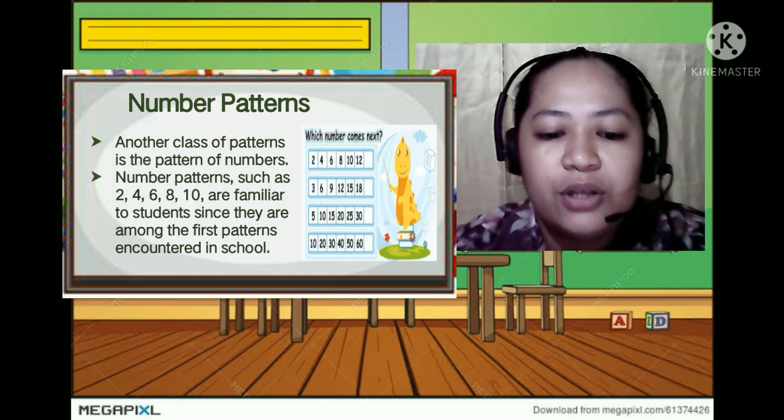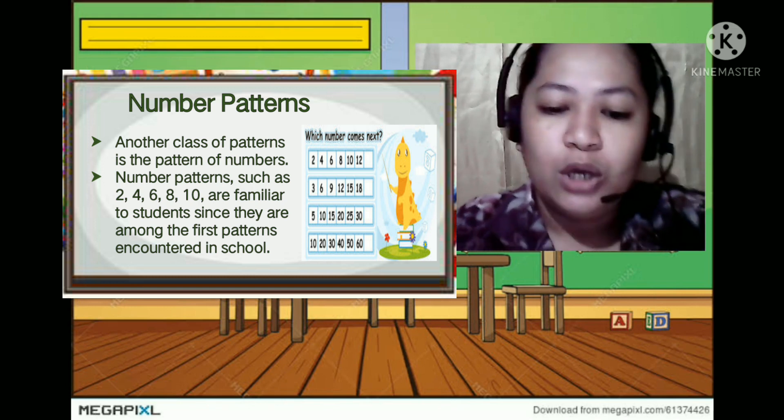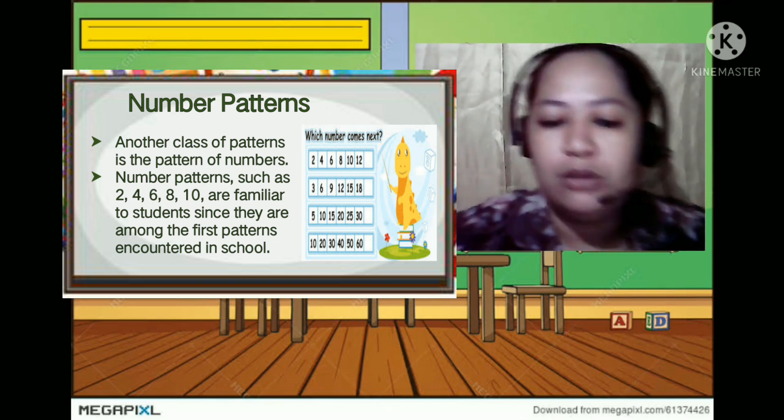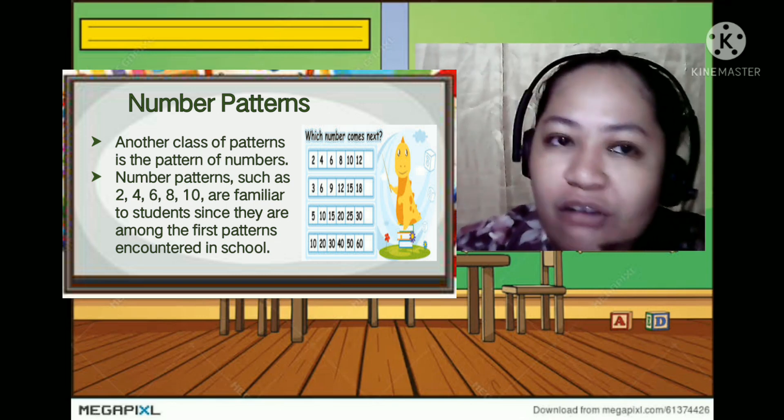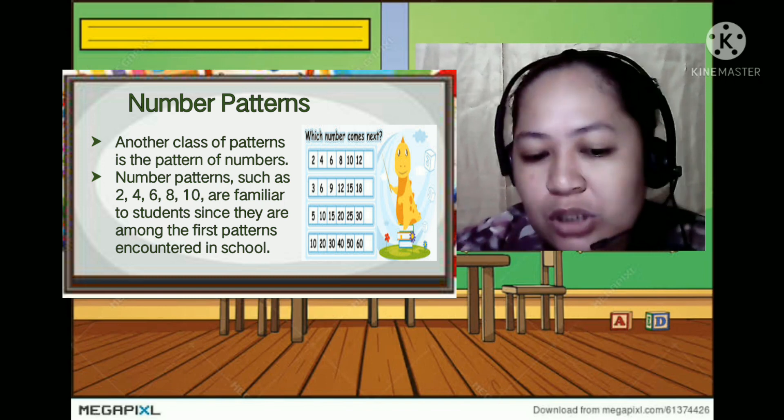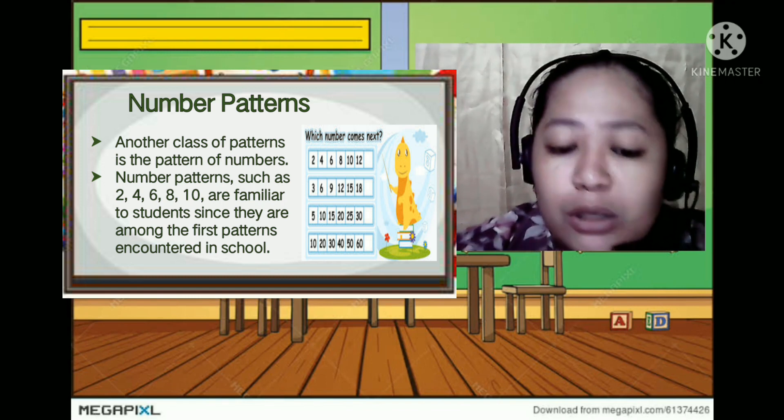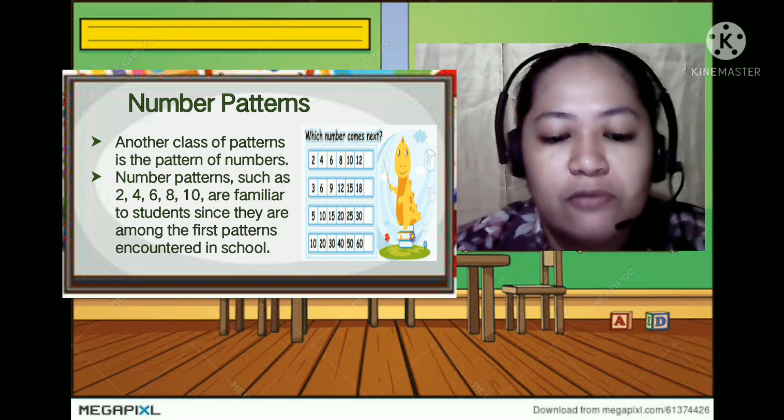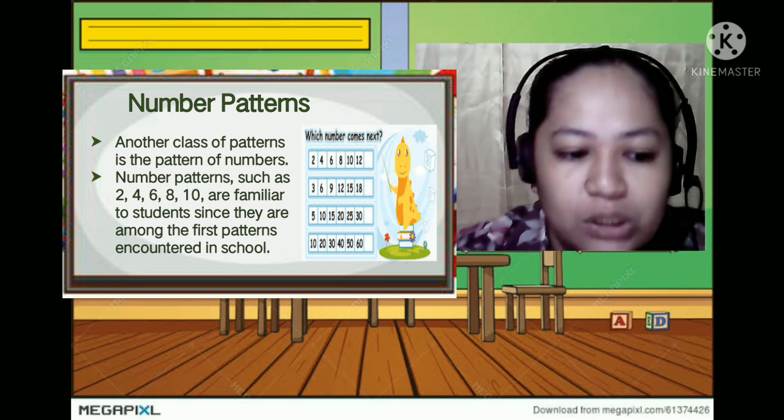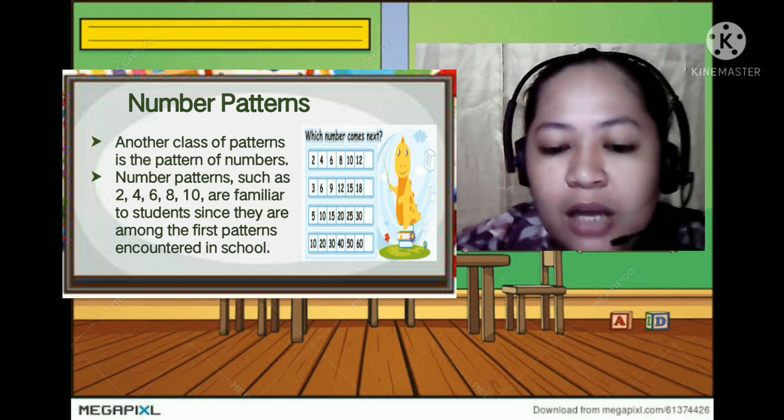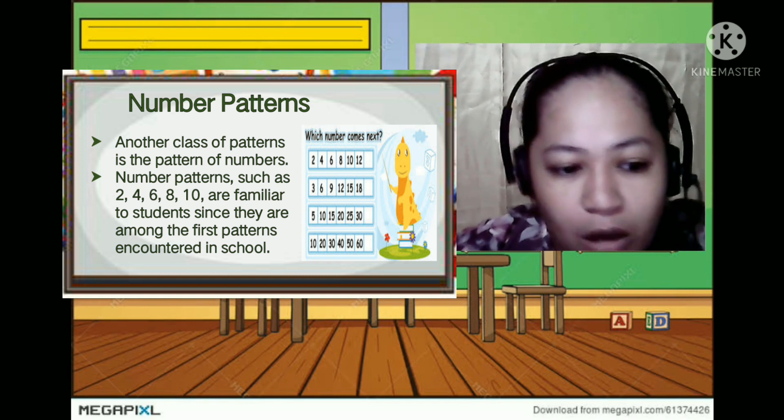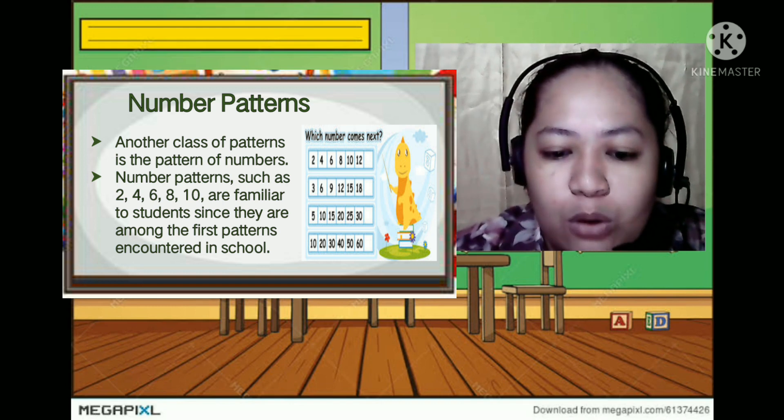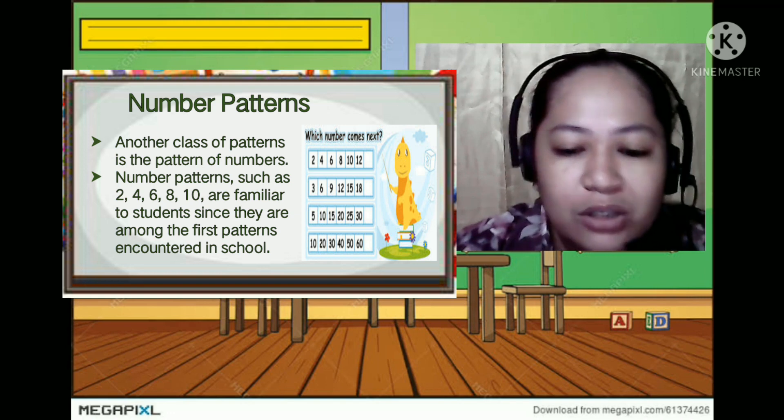The next one will be number patterns. As you can see, number patterns is another class of patterns in which a pattern of numbers like 2 4 6 8 10 are normally used. These are very familiar with us and even the students since they are among the first patterns encountered in schools, even in elementary days. So it's like 2 4 6 8 10, in multiplication 3 6 9 12 15. So as you can see here there are also blanks then you need to check out what would be the next number on that pattern.